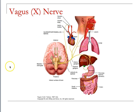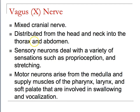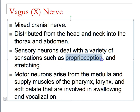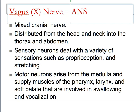The most important cranial nerve inside your body is the vagus nerve. You can see it exiting from the medulla, traveling to all of the viscera of your body. It will innervate your tongue, your lungs, your liver, your stomach, your intestines — pretty much everything inside your body. It's a mixed cranial nerve traveling from the head and neck into the thorax and abdomen, covering everything from proprioception to stretching of the organs, as well as autonomic ANS perception.